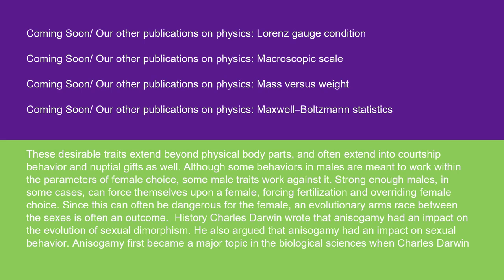These desirable traits extend beyond physical body parts and often extend into courtship behavior and nuptial gifts as well. Although some behaviors in males are meant to work within the parameters of female choice, some male traits work against it. Strong enough males, in some cases, can force themselves upon a female, forcing fertilization and overriding female choice. Since this can often be dangerous for the female, an evolutionary arms race between the sexes is often an outcome.